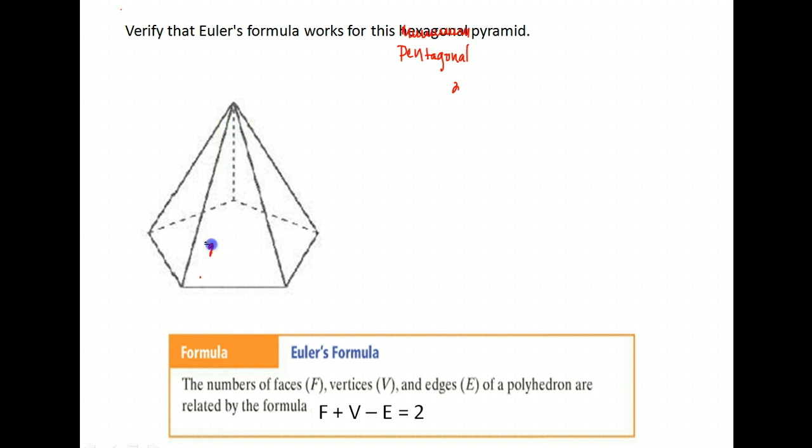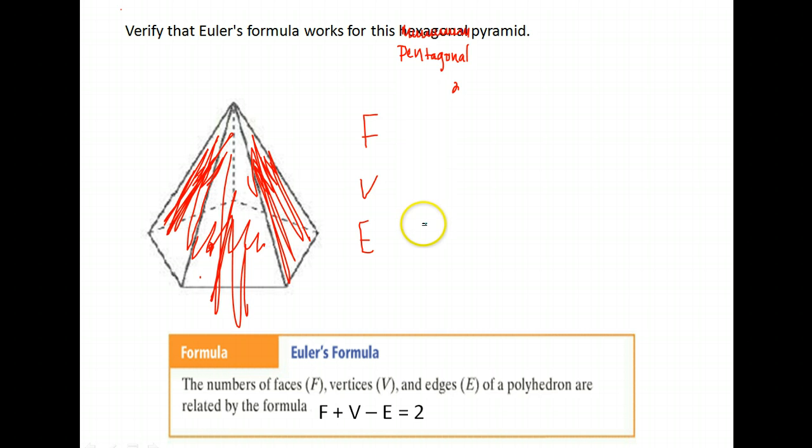We need to find, in order to verify the formula, we need to find the number of faces, we need to find the number of vertices, and we need to find the number of edges. So faces, how many do we have? We have the bottom here, one. We have one on the back here, two. One on the back here, three. Then we have the front left side, four. The front right side, five. And then the very front facing us, six. So we have six faces.